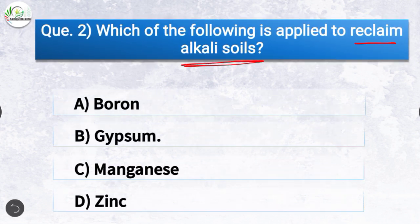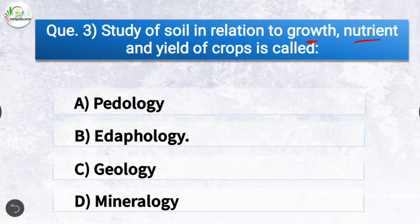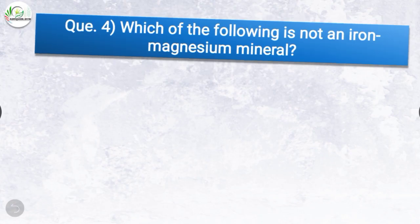The correct answer is option B, gypsum. Gypsum is applied to reclaim alkali soils. Question number three: study of soil in relation to growth, nutrient, and yield of crops is called what? The correct answer is option B, Edaphology. Edaphology is the study of soil in relation to growth, nutrient, and yield of crops and plants.